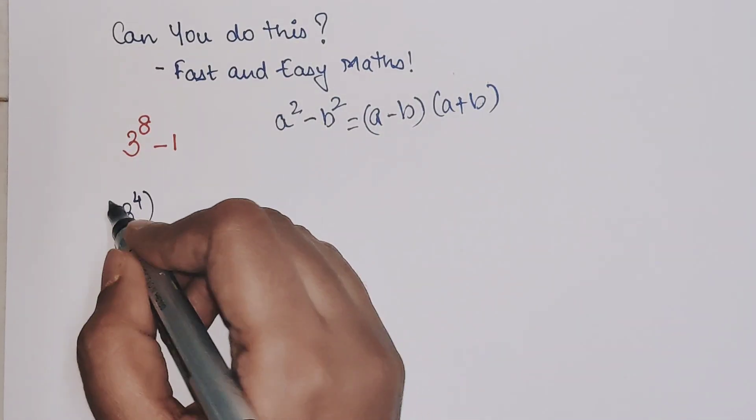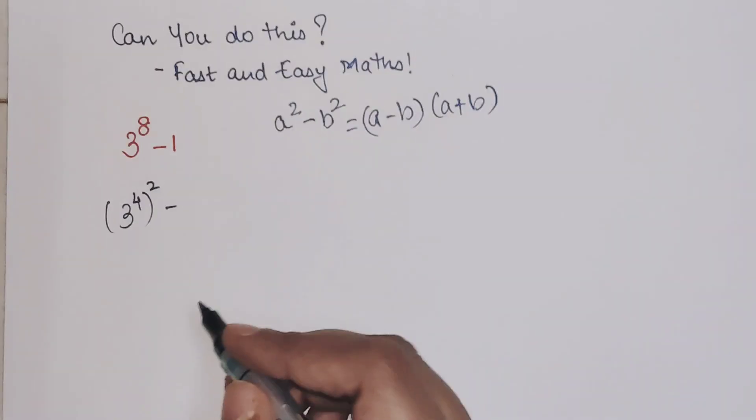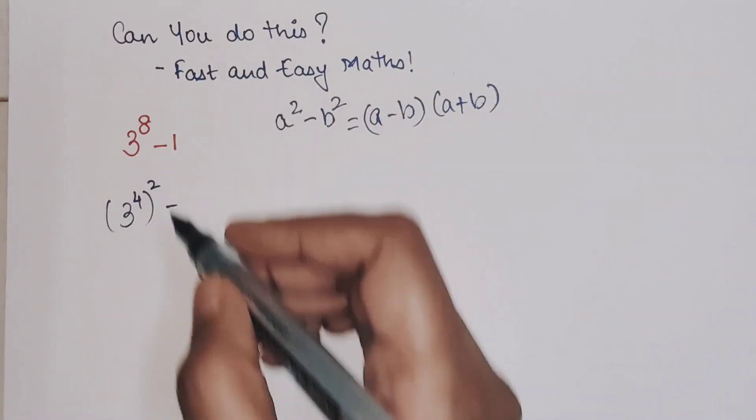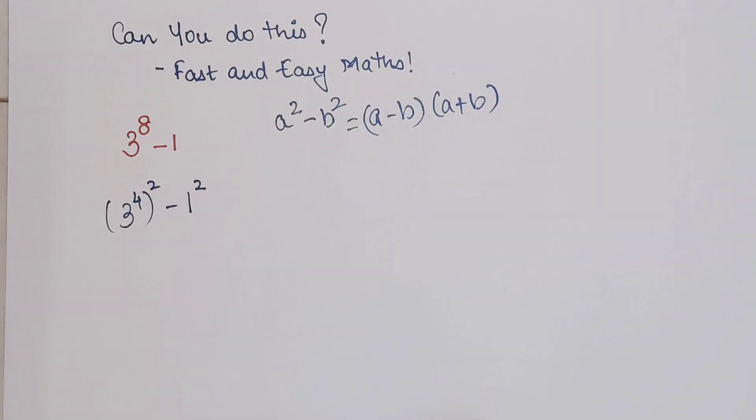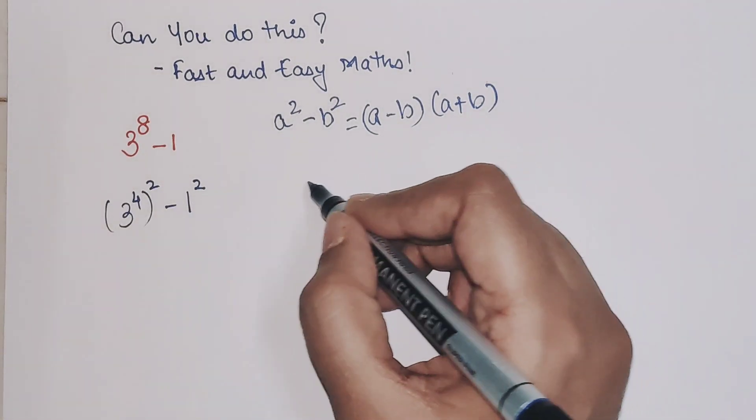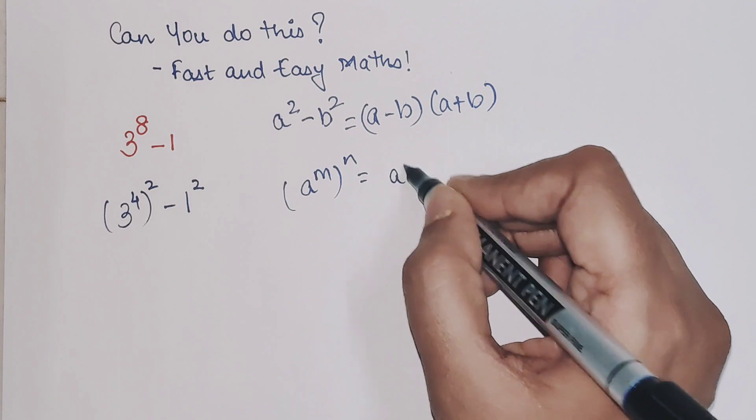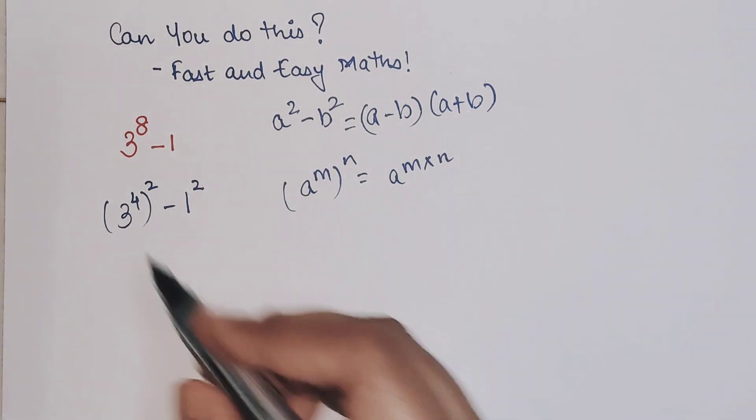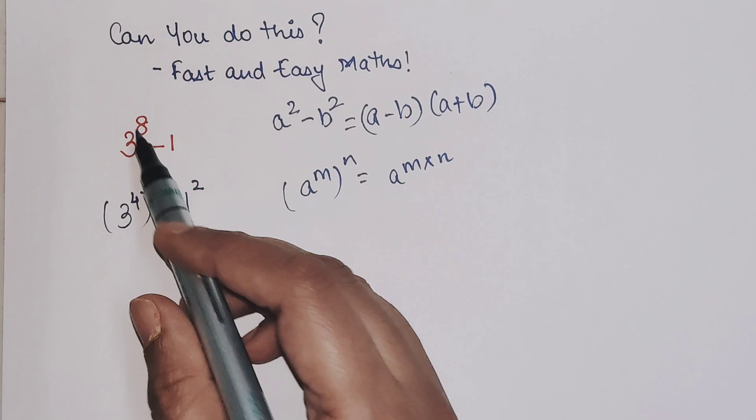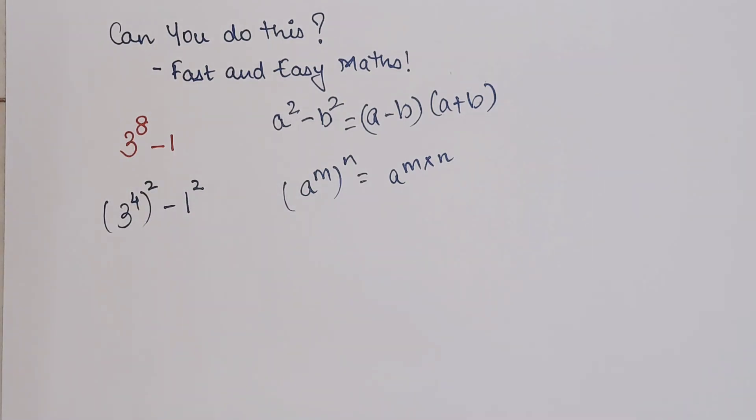as (3⁴)² - 1². Why have I written this like that? Because (aᵐ)ⁿ = aᵐⁿ. So (3⁴)² = 3⁴ˣ² = 3⁸.